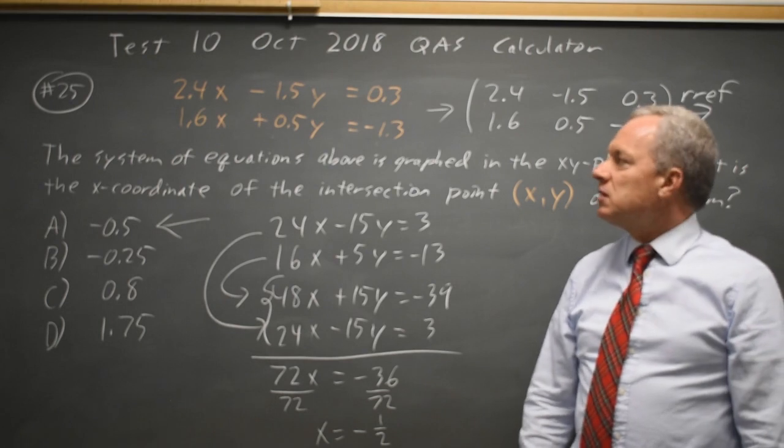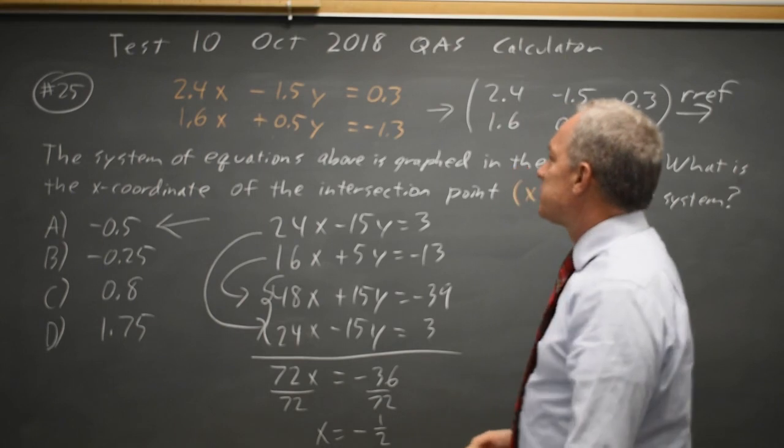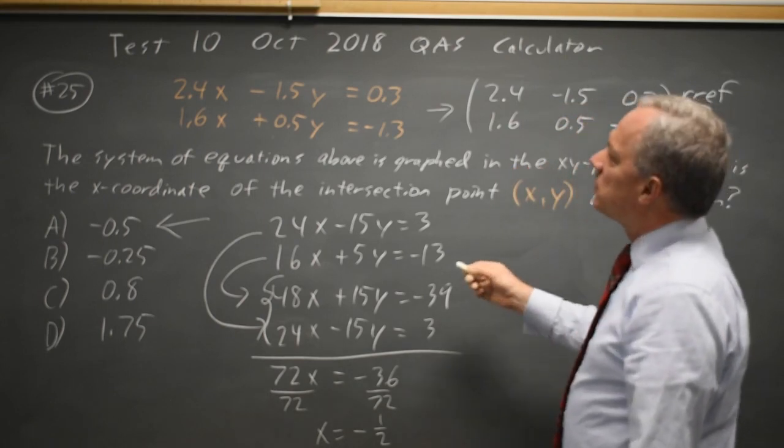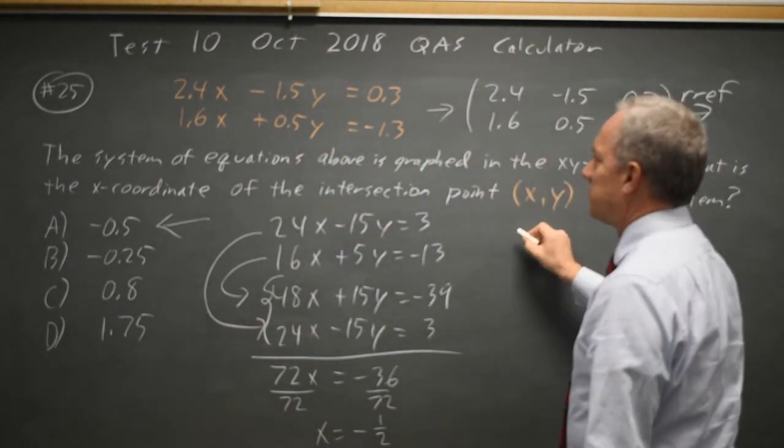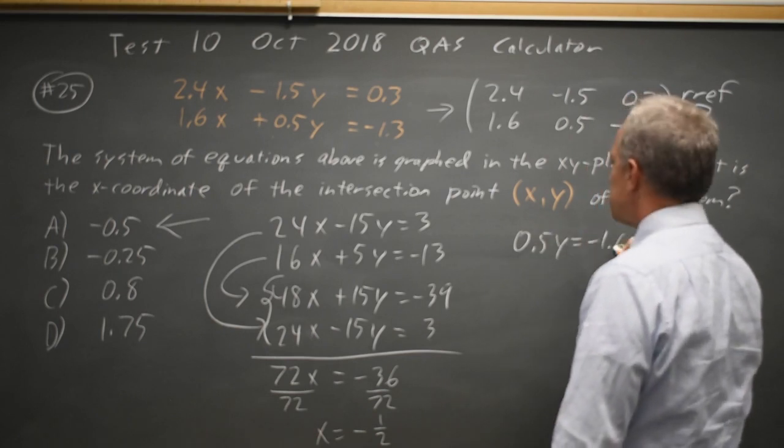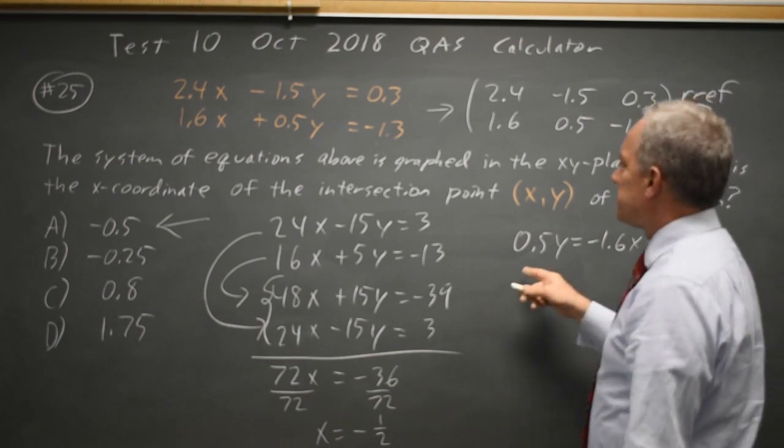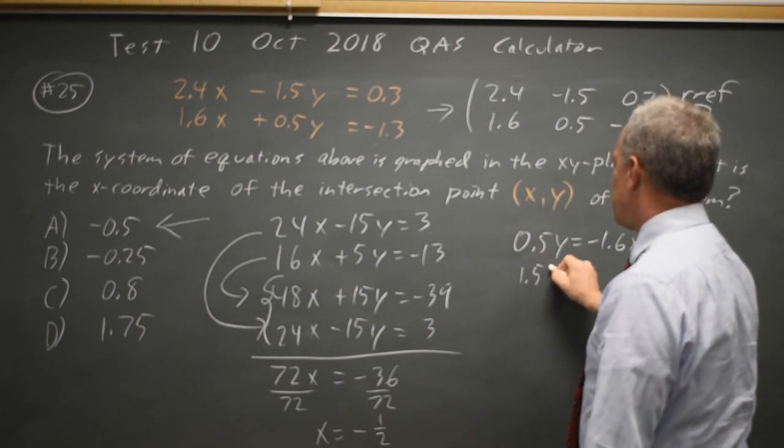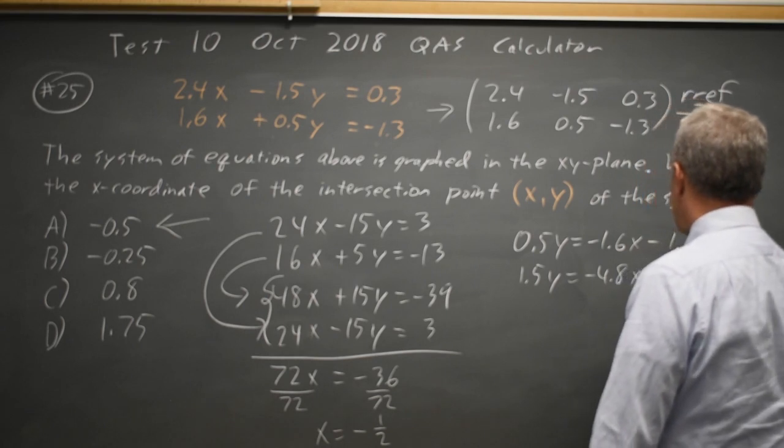Alternatively, I could have solved it a third way. And I'm going to keep the decimals because some of us are comfortable with decimals. I'm not. If I substitute in for y, 0.5y equals negative 1.6x minus 1.3. I'm going to triple this and substitute it in for 1.5y. So 1.5y equals negative 4.8x minus 3.9.